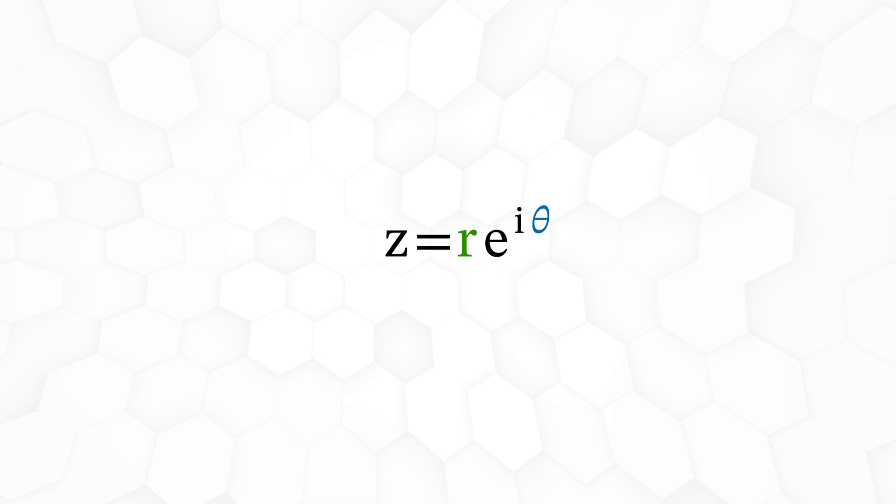By separating a number into polar coordinates, we are separating the number into a scaling part and a rotational part. Ideas that will be essential when we do multiplication in the next video.